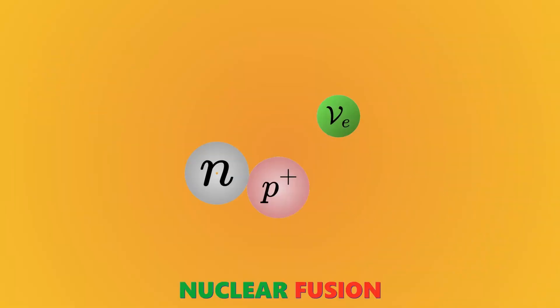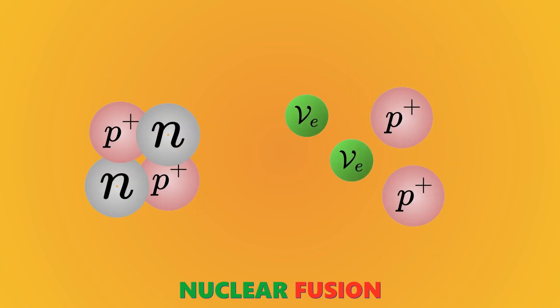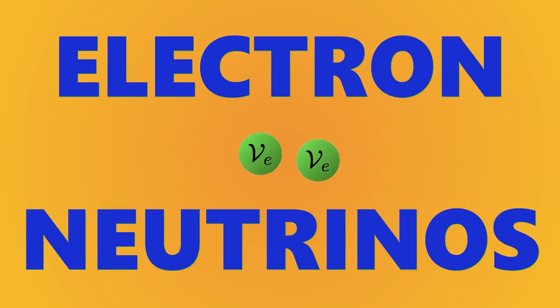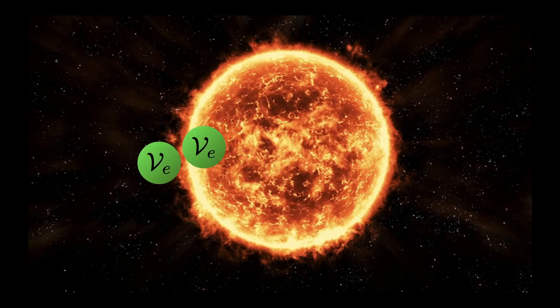Wait, where do these neutrinos come from? Well, they actually come from the sun. Our sun does nuclear fusion to produce heat and light. During this process, the sun releases two electron neutrinos. Because neutrinos can literally pass through anything, they will escape the sun and start traveling in space.